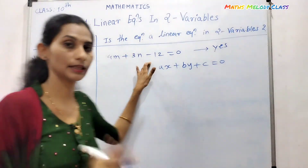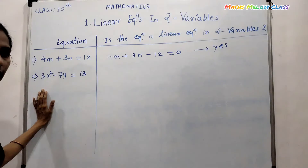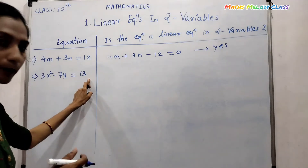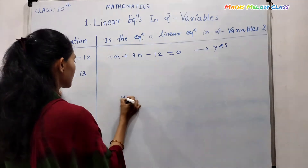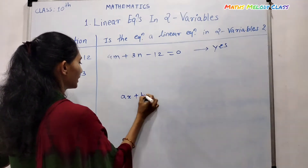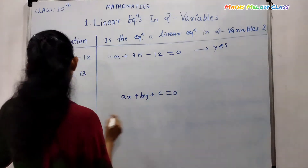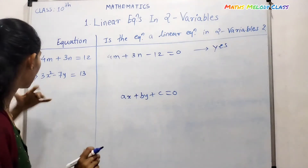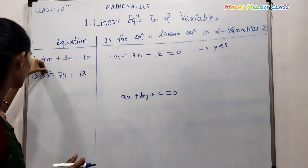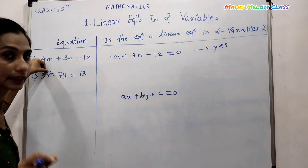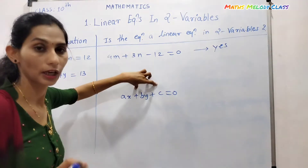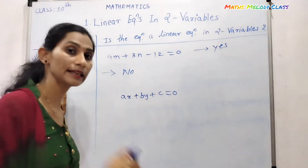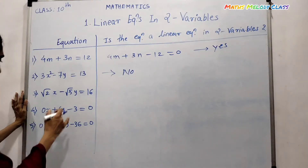The second equation is 3x squared minus 7y equals 13. Comparing with the general form ax plus by plus c equals zero, there are two variables x and y, but the degree of x is two. According to the general form, the degree should be one. Therefore this is not a linear equation.